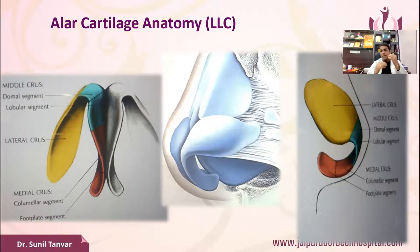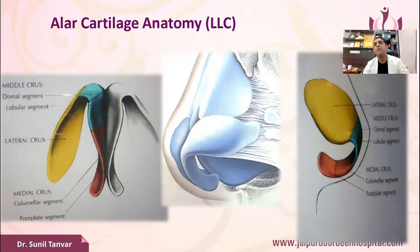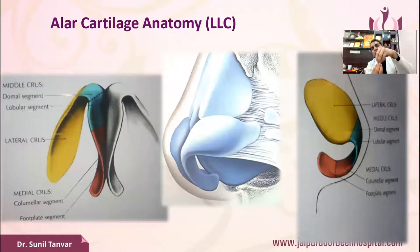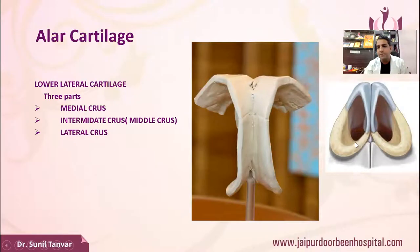The tip has three major support mechanisms: the size, shape, and resilience of the entire LR cartilage; the attachment of the caudal septum with the medial crus; and the scroll area. The foot plate part of the medial crus rests on the fatty tissue over the anterior nasal spine. If you look at this video, the foot plate area rests on the anterior nasal spine fatty tissues.